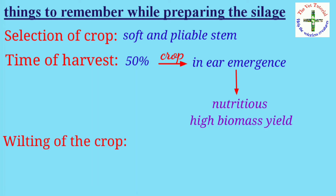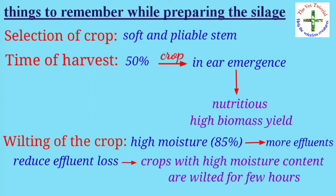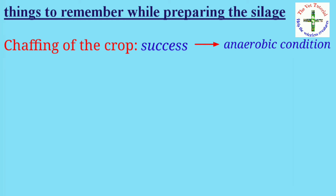Third is wilting of the crop. Crops with high moisture content — around 85 percent — will produce more effluent that goes to waste. To reduce effluent loss, crops with high moisture content are wilted for a few hours until moisture level is reduced to 60 percent.